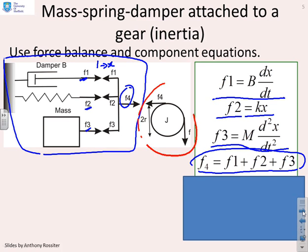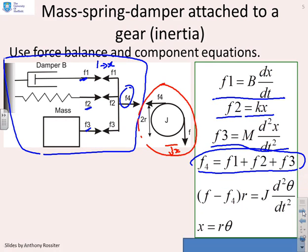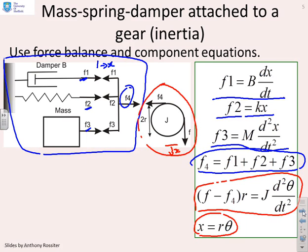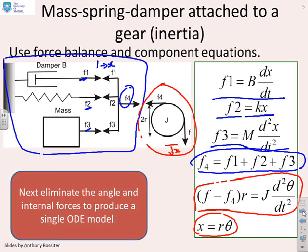Next we want to look at the pulley part. This has the same extension x and x was r theta. Here's the equation for the acceleration of the pulley. We've got (f minus f4) times r which is the radius, so that's the torque supplied, equals J (the inertia) times d²theta/dt². A reminder of the relationship: x equals r theta. We've got an extra couple of equations compared to what we had just for the mass spring damper. What we propose is first eliminate the angle theta using this equation at the bottom, then eliminate all the internal forces f1, f2, f3, and f4.